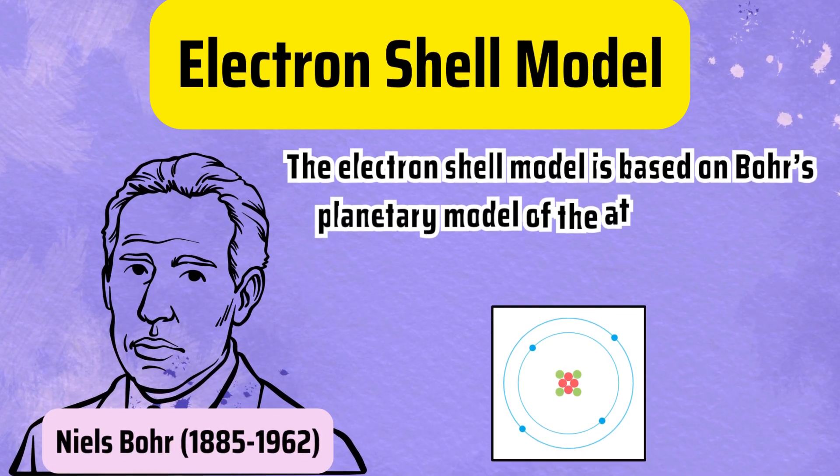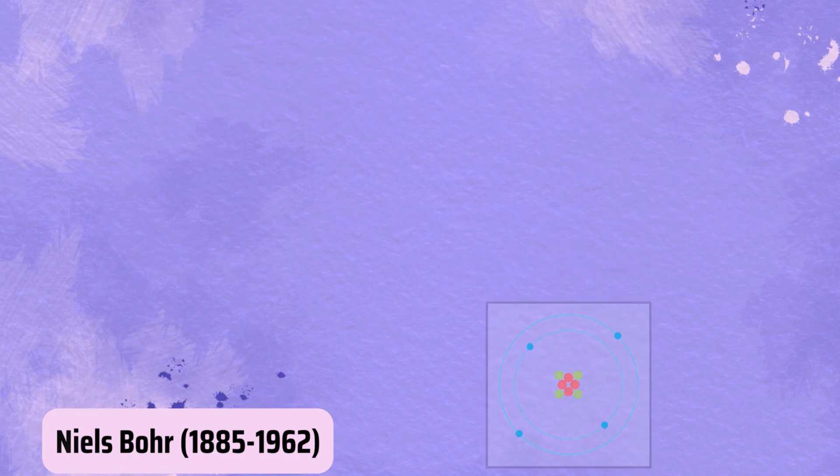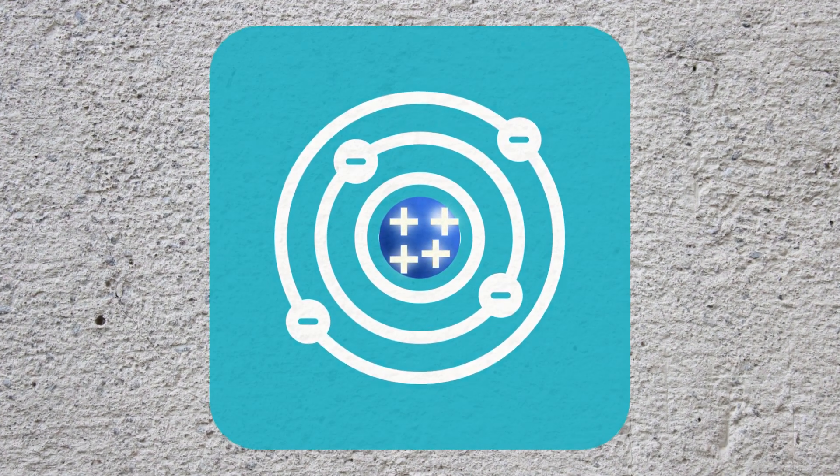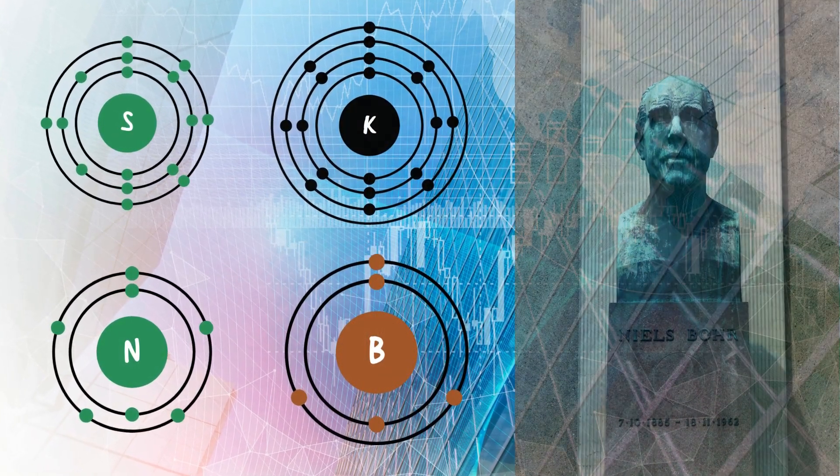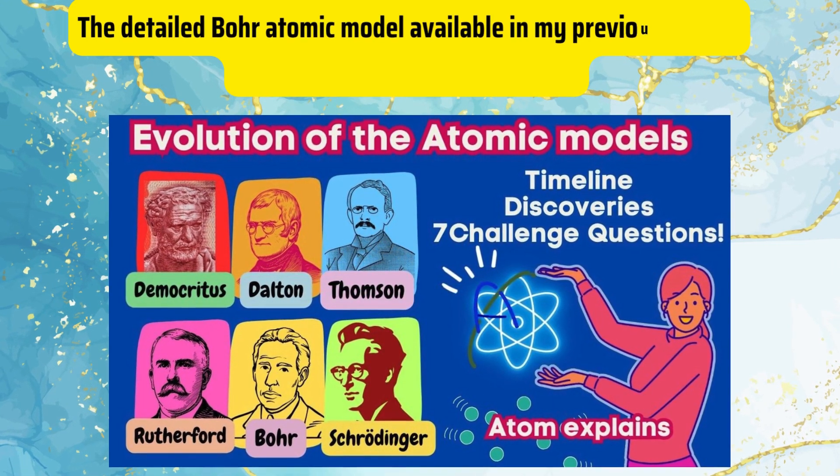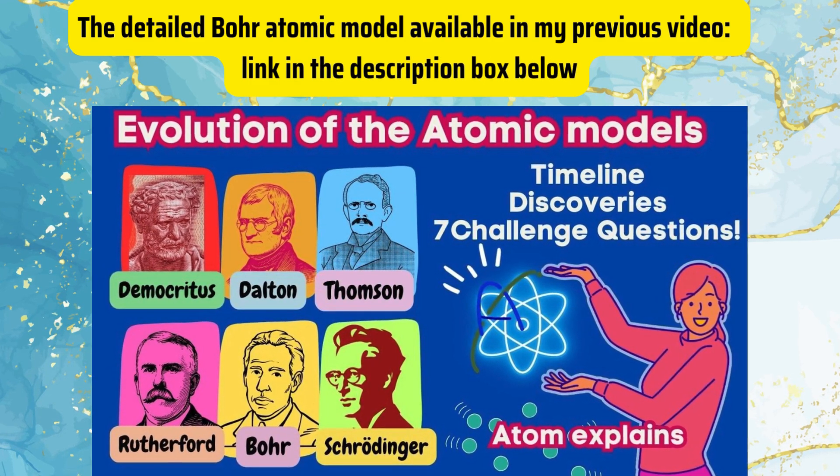The electron shell model is based on Bohr's planetary model of the atom which he proposed in 1913. According to the Bohr model, electrons orbit the nucleus in discrete energy levels or shells. You can review the detailed Bohr atomic model in my previous video called Evolution of the Atomic Models. Link in the description box below.